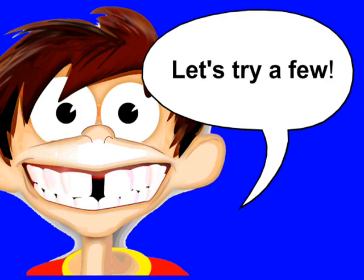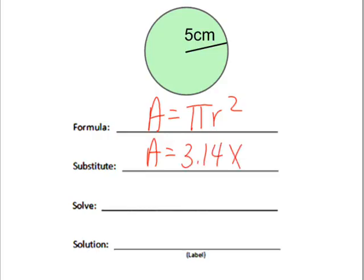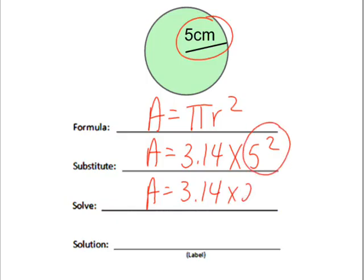So let's try a few of these. Start with our formula: area equals pi r squared, and we're going to be using 3.14 for pi. The radius of the circle is 5, and we're going to square that. So we do 3.14 — we need to square 5 first, so that's 25. And 3.14 times 25 would be 78.5 square centimeters.